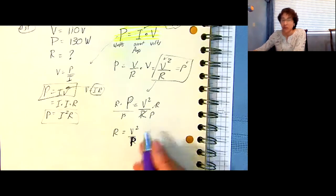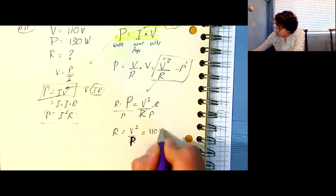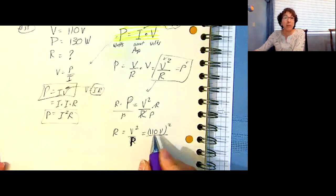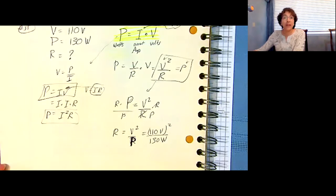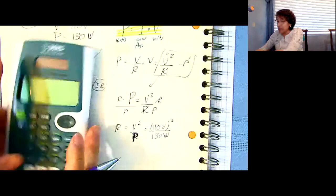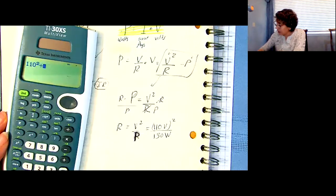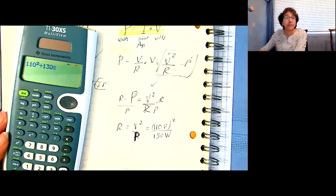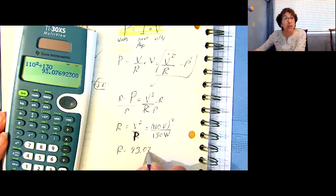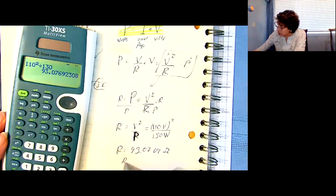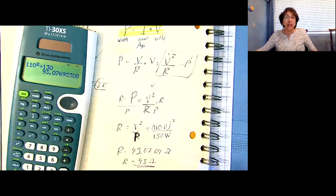So R, the resistance, is V squared over P. We've got the V, the voltage, 110 volts, I'm going to square that, divide it by my power, 130 watts. So it's that 110 squared divided by 130, and I end up with R is equal to 93.076 ohms, so R is about 93 ohms.